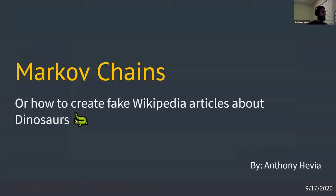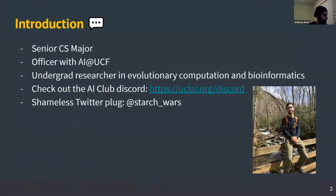Hey everybody, my name is Anthony. This week this workshop is going to be about Markov chains. The title of the slide is 'Markov Chains, or How to Create Fake Wikipedia Articles About Dinosaurs.' A little bit about me: I'm a senior CS major here at UCF, an officer with AI at UCF. I've done research here at the school in evolutionary computation, generative storytelling, and bioinformatics.